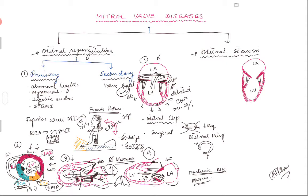Now we turn to mitral stenosis. It can occur from senile calcification in elderly patients in their 80s, where the valve leaflets become rigid and stuck, causing obstruction of blood flow from the left atrium to the left ventricle. When that happens, the left atrium starts to dilate and left atrial pressures go up - echo can be diagnostic. It can also result from rheumatic heart disease, which is more common in third world countries in younger patients.